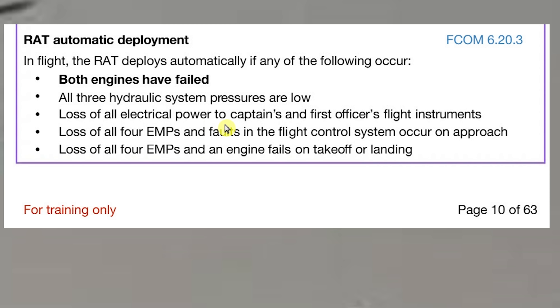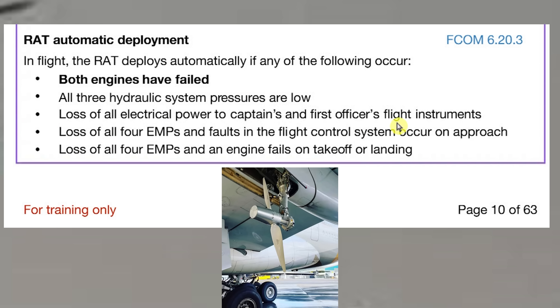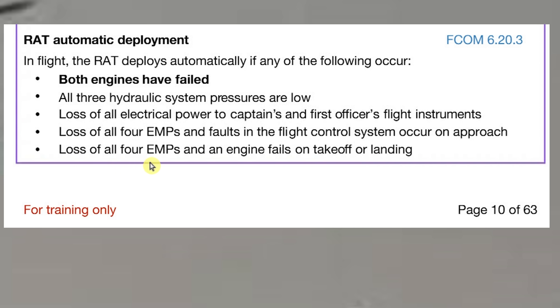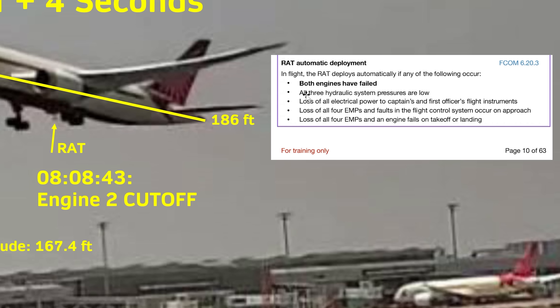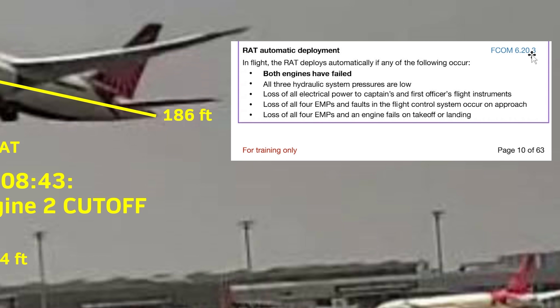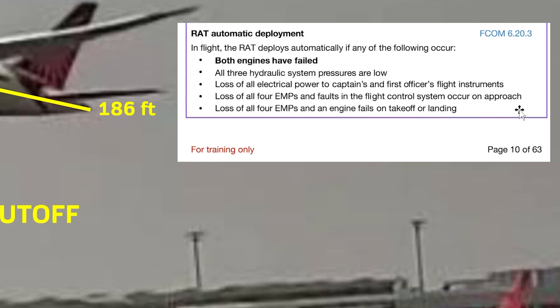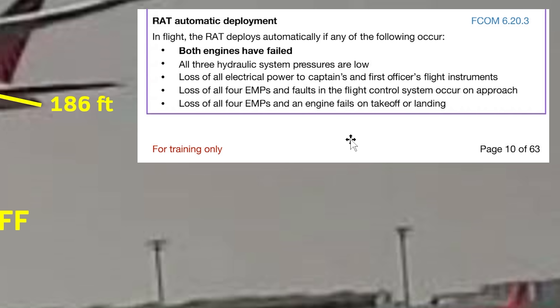If there was an electrical failure causing the RAT to deploy, the Boeing manual states the RAT deploys when you have all electrical power lost to the captain's and first officer's flight instruments. If that had happened, they wouldn't have even taken off — their screens would be off. And if all four EMPs were lost and an engine fails on takeoff, that's a possibility, but it wouldn't happen on the ground. This comes directly from Boeing's official Flight Crew Operations Manual, FCOM 6.20.3, showing all possible scenarios which would cause the RAT to deploy.